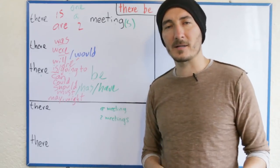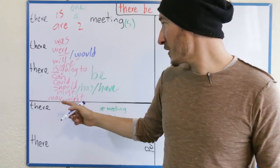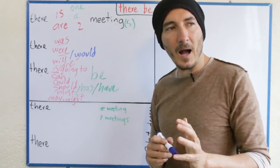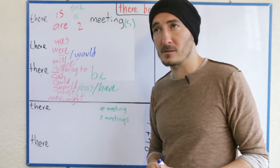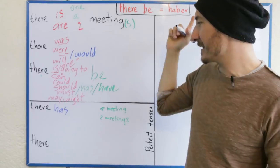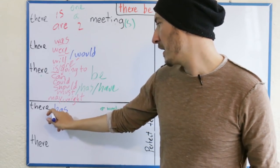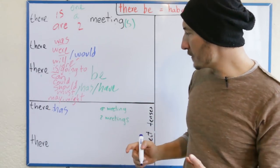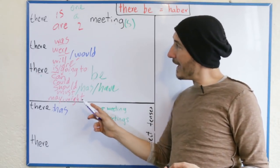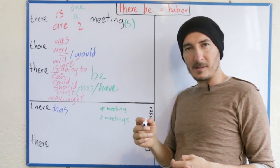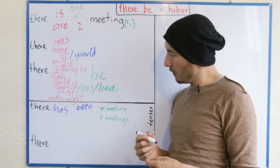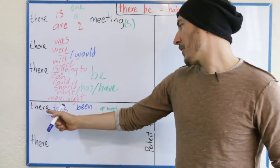Ahora pasamos a los perfectos. ¿Cómo se diría 'ha habido una reunión' y 'ha habido dos reuniones'? Para el perfecto lo primero que tengo que tener en cuenta es el verbo 'have' como auxiliar, y lo segundo es que el tiempo tiene que ir en participio — como 'he comido, he viajado, he salido'. Entonces el 'be' se convierte en 'been'. Ha habido una reunión — there has been a meeting. Ha habido dos reuniones — there have been two meetings.